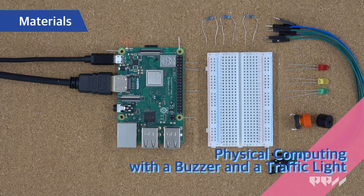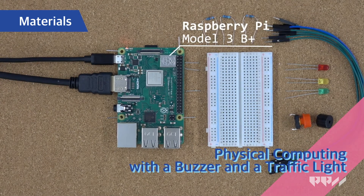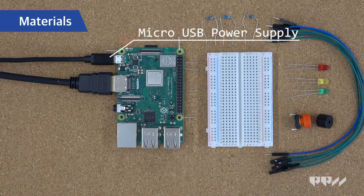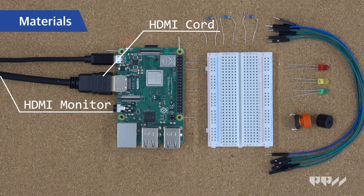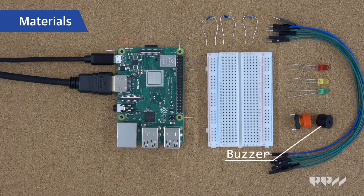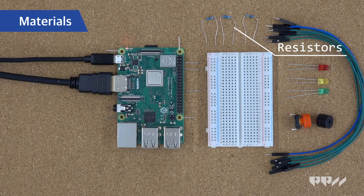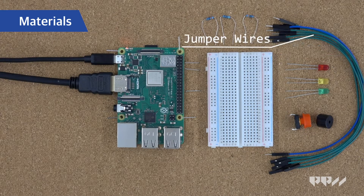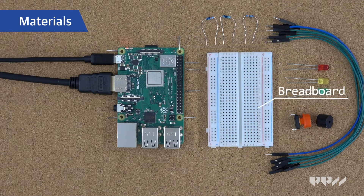Materials: Raspberry Pi Model 3D Plus, Micro USB power supply, HDMI cord, HDMI monitor, 8GB micro SD card, buzzer, LEDs, resistors, jumper wires, breadboard, and a button.